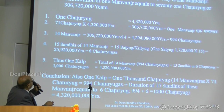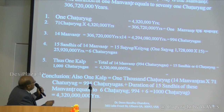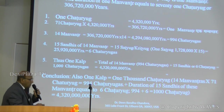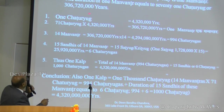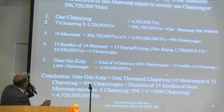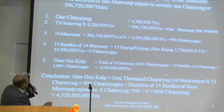One rotation of the Sun around the Milky Way is called one Manvantara. The duration of one Manvantara is 306,720,000 years. As we calculated before, one Manvantara contains 71 Chatur Yugas — 71 Chatur Yugas comes to one Manvantara.